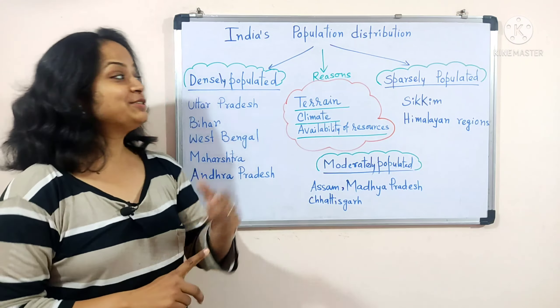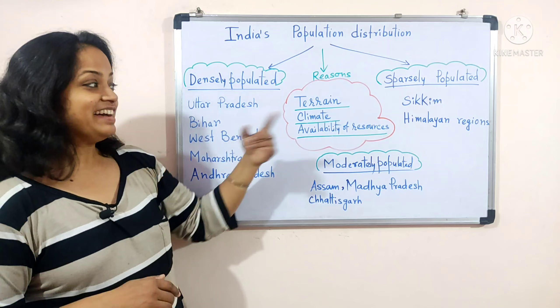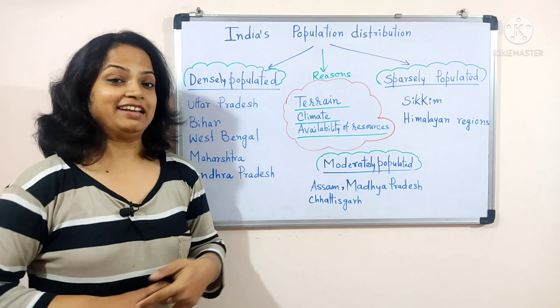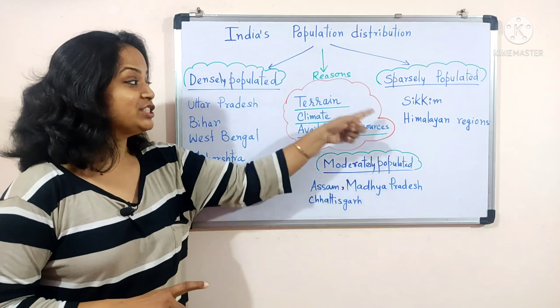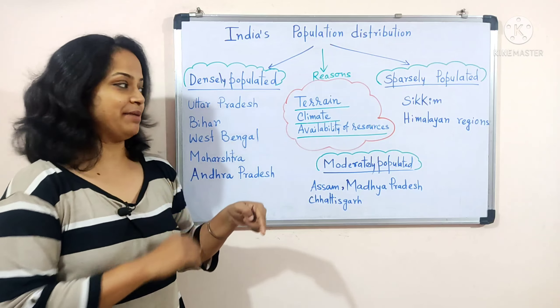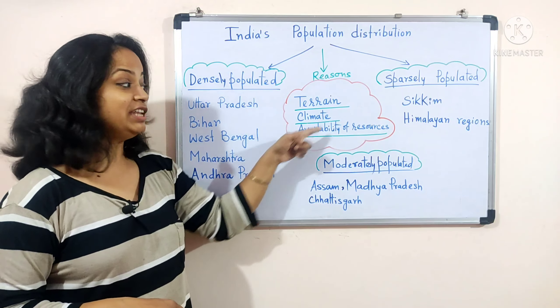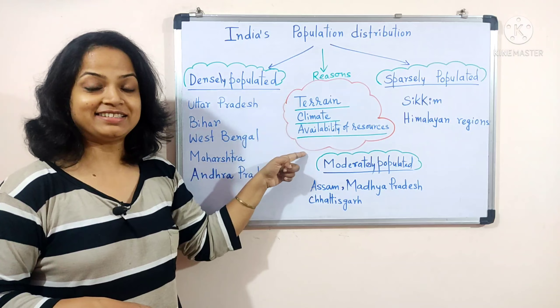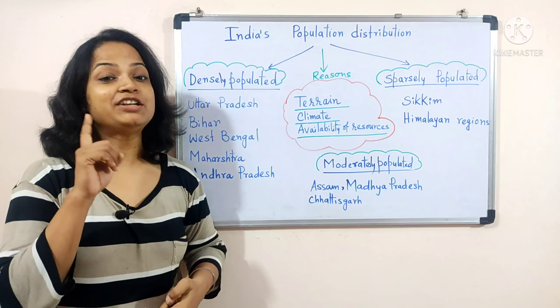Uttar Pradesh — why is it thickly populated? First, terrain: plain land. Second, climate: very moderate and favorable. Third, availability of resources: water availability is good, and transportation and communication are very fast. People love to live there, and the plain land also provides excellent agricultural facilities.